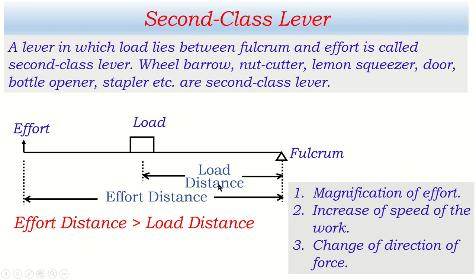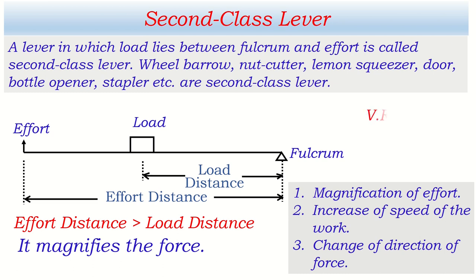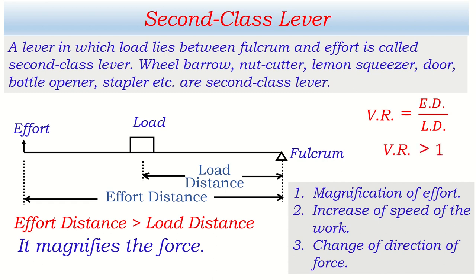Out of three advantages of a simple machine, the second class lever gives only one advantage — magnification of effort. As for velocity ratio, it is the ratio of effort distance to load distance. In a second class lever, effort distance is always longer than load distance, so the numerator is always greater than the denominator, meaning velocity ratio is always greater than one.